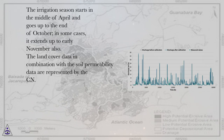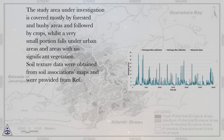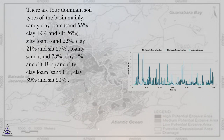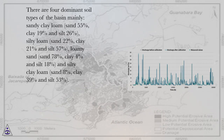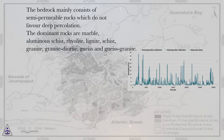The land cover data in combination with the soil permeability data are represented by the CN. The study area is covered mostly by forested and bushy areas, followed by crops, whilst a very small portion falls under urban areas and areas with no significant vegetation. Soil texture data were obtained from Soil Association maps. There are four dominant soil types: sandy clay loam (sand 55%, clay 19%, silt 26%), silty loam (sand 22%, clay 21%, silt 57%), loamy sand (sand 78%, clay 4%, silt 18%), and silty clay loam (sand 8%, clay 39%, silt 53%).